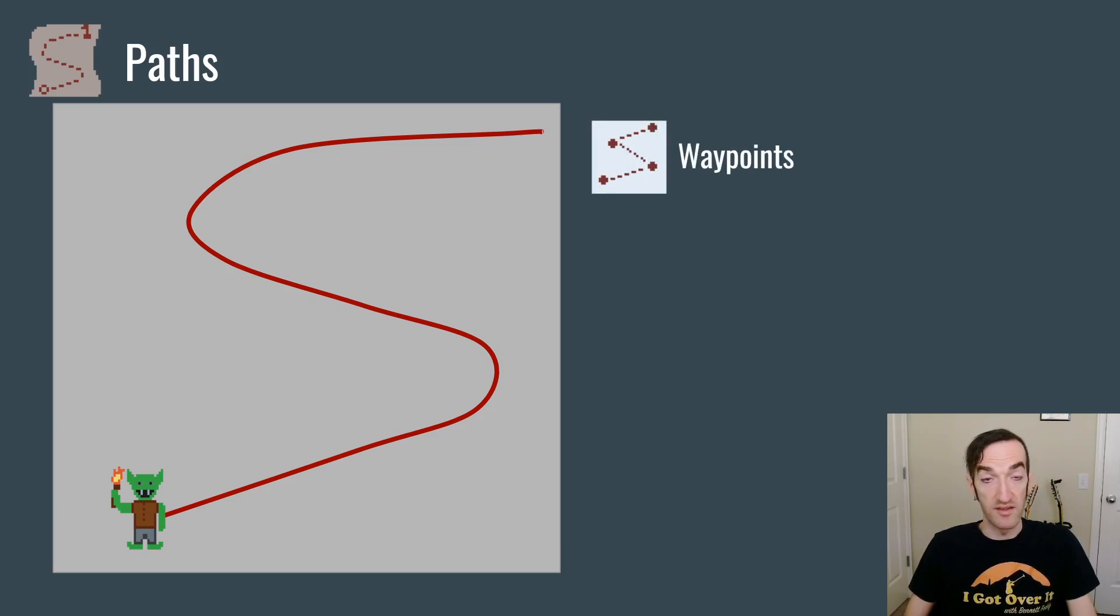They can be set up as a series of waypoints, which are coordinates in space that the monsters will move between, either linearly in straight lines or maybe with a spline for a curve. Or they can be defined by a pathfinding grid, where you use an algorithm like A-star or Dijkstra's to compute where the monsters can move from a start to an end point.